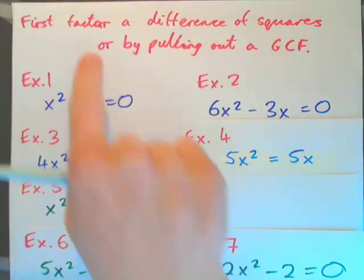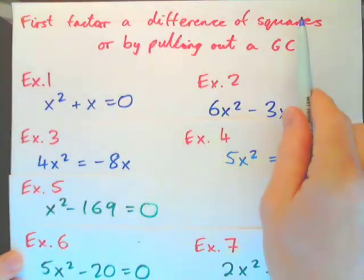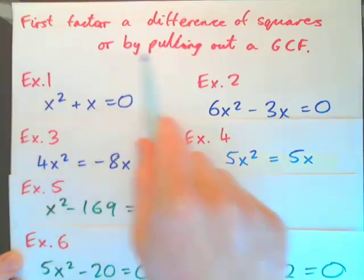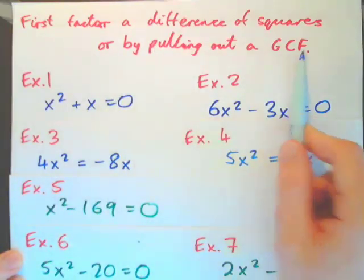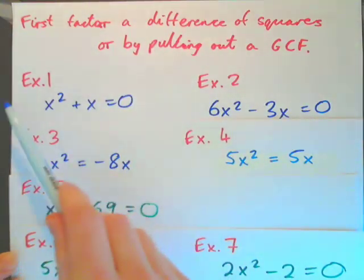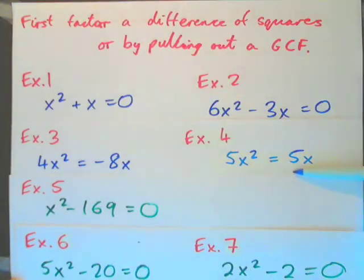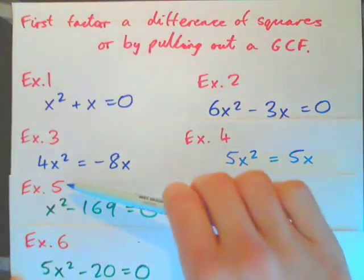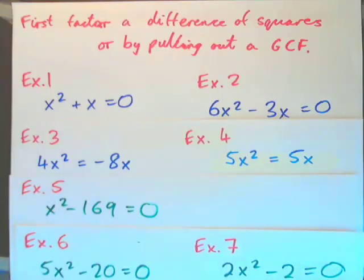In this video, we're going to first factor a difference of squares, or factor by pulling out a greatest common factor. We'll do examples 1 through 7. The first 4 involve pulling out a greatest common factor, and then examples 5, 6, and 7 use the factoring a difference of squares method.